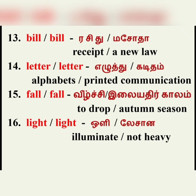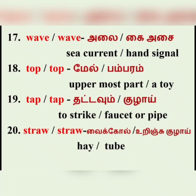Next, 'wave.' One wave is a sea current. The other wave is showing a hand signal. Then 'top' — one top means the uppermost part, like the top of a mountain or the top floor. The other top is a spinning toy, called a 'bambaram' in Tamil.